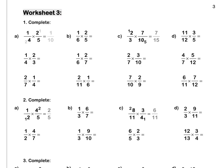Worksheet 3. For this sum, we have a quarter times two fifths. We can simplify 2 and 4 by dividing both by 2. 2 divided by 2 is 1, and 4 divided by 2 is 2. Then we multiply out to get one tenth.